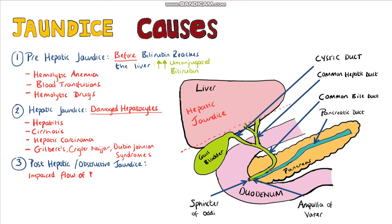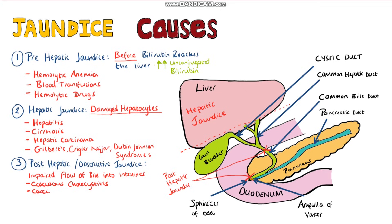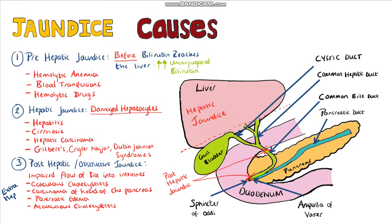Post-hepatic or obstructive jaundice happens because there's something stopping the flow of bile into the intestines. These are usually extra-hepatic causes leading to cholestasis, including calculous cholecystitis, carcinoma of the head of the pancreas, oedema from pancreatitis, and acalculous cholecystitis. Occasionally, you can also get intrahepatic causes, such as swelling or fibrosis from cirrhosis.